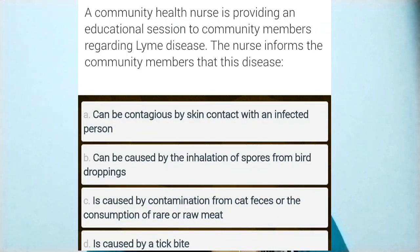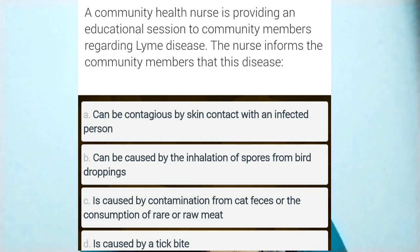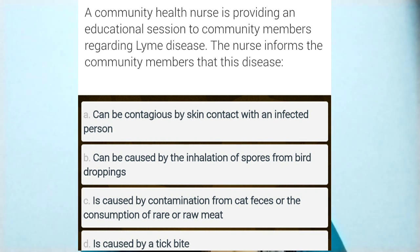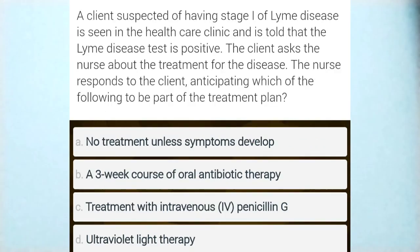Now we can move to the question part. Question one: a community health nurse is providing an educational session to community members regarding Lyme disease. The nurse informs them that this disease: (1) can be contagious by skin contact with an infected person, (2) can be caused by inhalation of spores from bird droppings, (3) is caused by contamination from cat feces or consumption of rare or raw meat, or (4) is caused by tick bite. The answer is option 4 — Lyme disease is a multi-system infection that results from a tick bite.